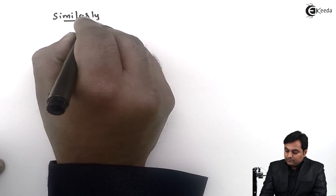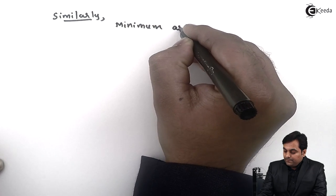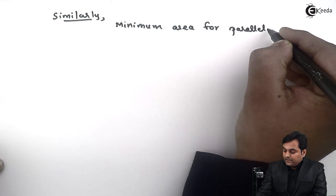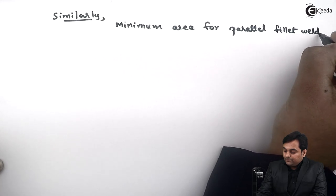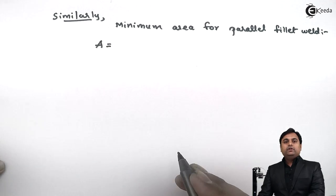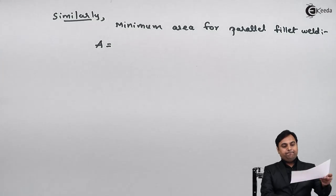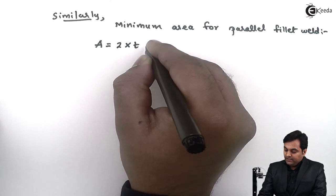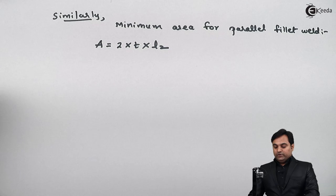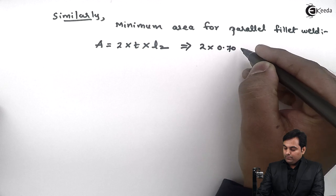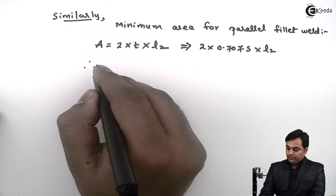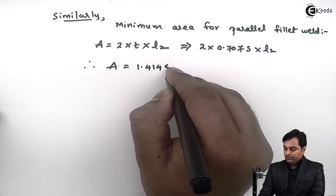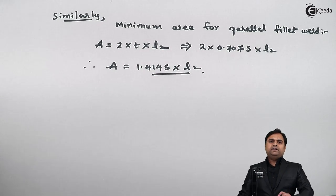Similarly, I will calculate the area for the parallel fillet weld. The minimum area for the parallel fillet weld: since we have two parallel fillet welds as seen in the diagram, the area is 2 multiplied by T times L2, where L2 is the length of each parallel fillet weld. This gives 2 times 0.707·S·L2, so the area equals 1.414·S·L2.